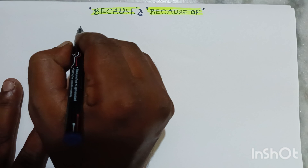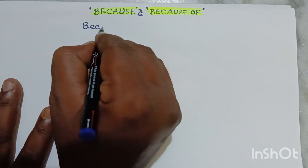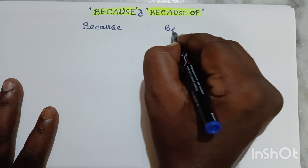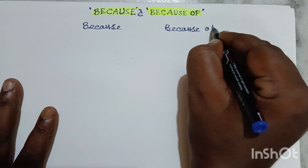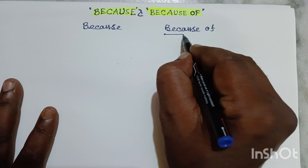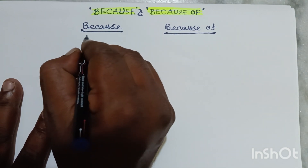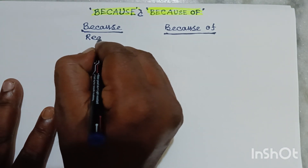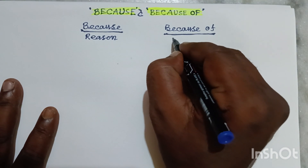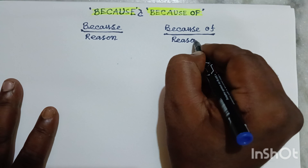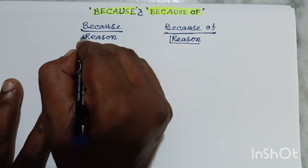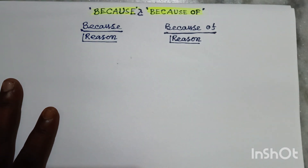First of all, we have 'because' on one side and 'because of' on the other. Both of these — 'because of' is a compound word and 'because' is a simple word. 'Because' is used to show reason, and 'because of' is also used to show reason. So the meaning of these two words is the same — there is no difference in meaning. But my dear friends, these two things are very much different in usage.